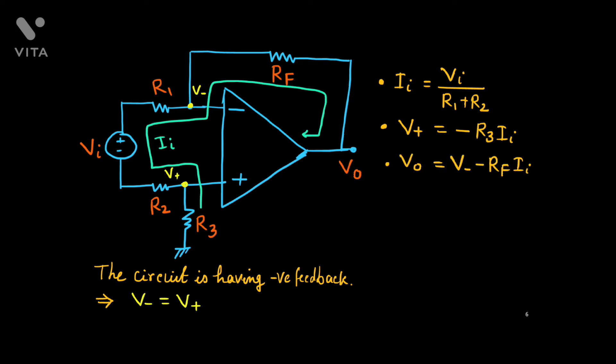Now, V0, similarly we can calculate. So you see, this V0 is V- minus this drop across the Rf. And the drop is Rf times ii. Thus, V- minus Rf times ii. That is your V0. Now, we can replace this V- as V+. Because they are same. And again, we can replace the value of V+ by minus R3 times ii.